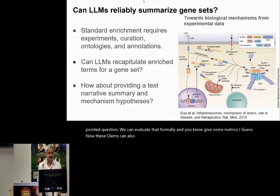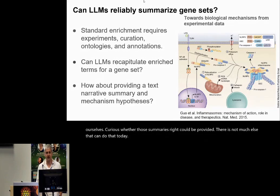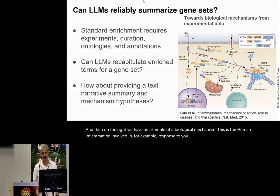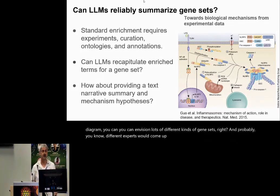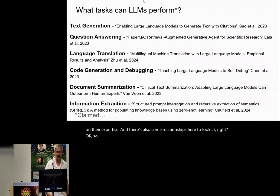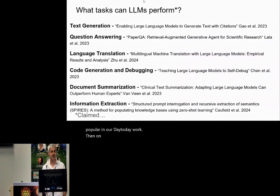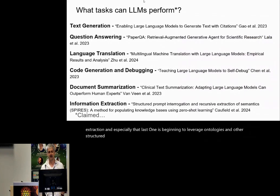LLMs can also provide narrative text, which is something hard to evaluate. We're curious whether those summaries could be provided — there's not much else that can do that today. On the right, we have an example of a biological mechanism — the human inflammasome involved in, for example, response to microbial infection. Looking at this diagram, you can envision lots of different kinds of gene sets, and different experts would come up with maybe different subsets depending on their expertise.